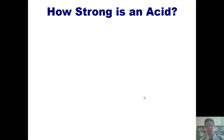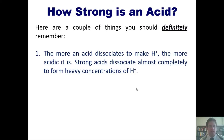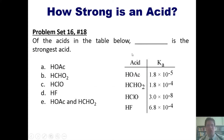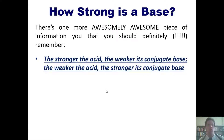How strong is a specific acid? The more an acid dissociates to make H+, the more acidic it is. Strong acids dissociate almost completely to form heavy concentrations of H+. The larger the Ka value, the greater the H+ concentration an acid makes — in other words, the larger the Ka, the stronger the acid. There is one more crucially important piece of information: the stronger the acid, the weaker its conjugate base; and the weaker the acid, the stronger its conjugate base. You must remember this — it's crucially important.